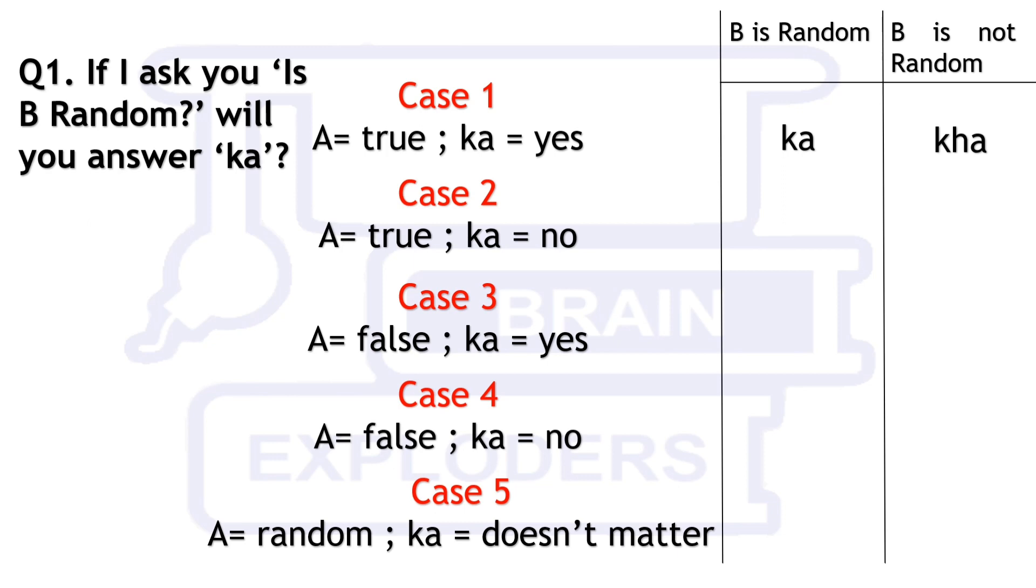For example if B is random and in the first case if we ask is B random then he would say yes and overall we are asking a true thing that would he say Ka so he will reply truly and say Ka.